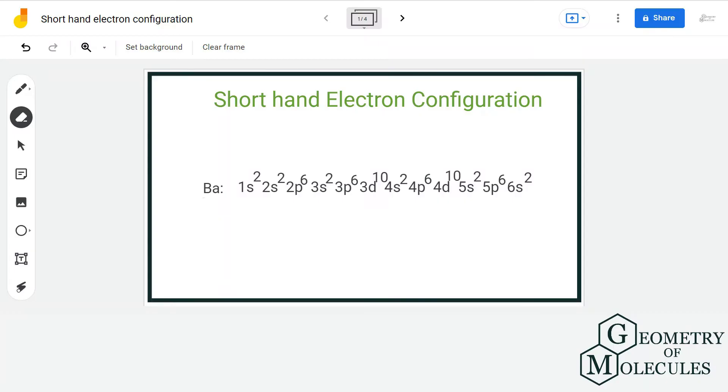Hello guys, welcome back to our channel. In this video, we will look at the shorthand electronic configuration of elements. Let us take an example of barium. It is group 2A element and has 56 electrons. This is the electronic configuration of barium.